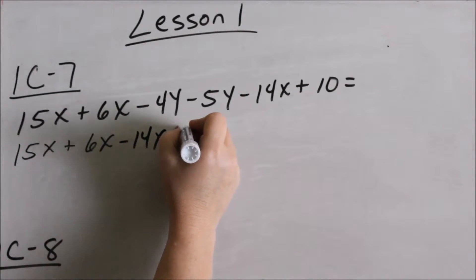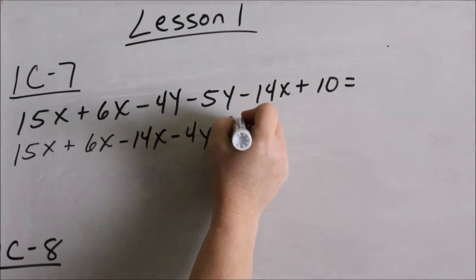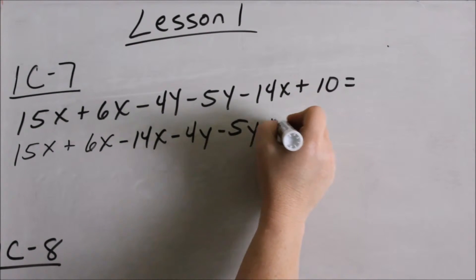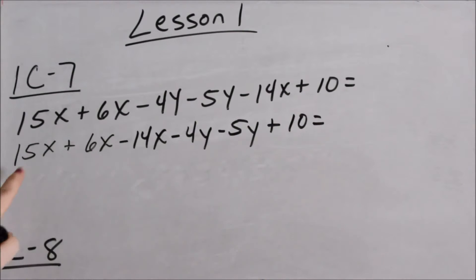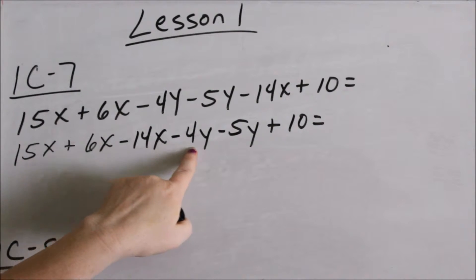Now I'm going to rewrite my Y's, keeping all the signs in front of the number with them. So now all of my X's are together, all of my Y's are together, and then any whole number.